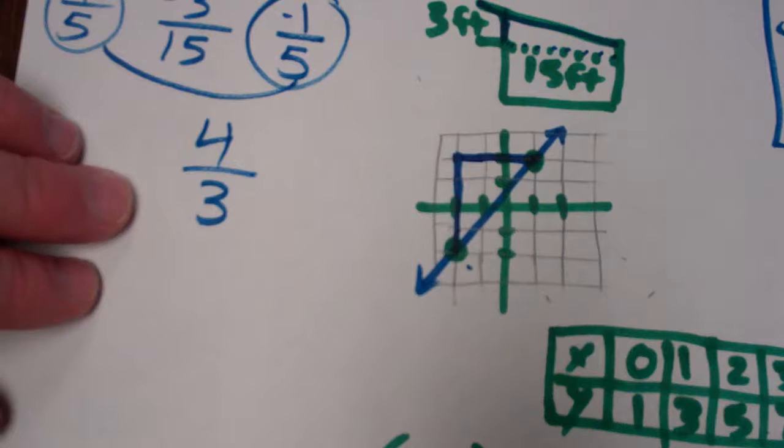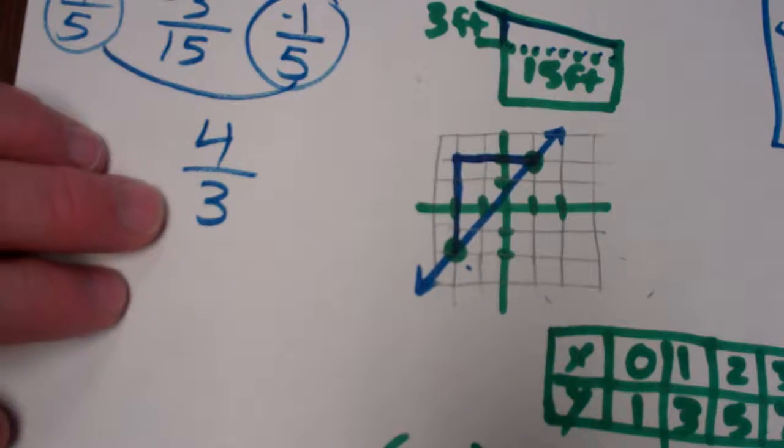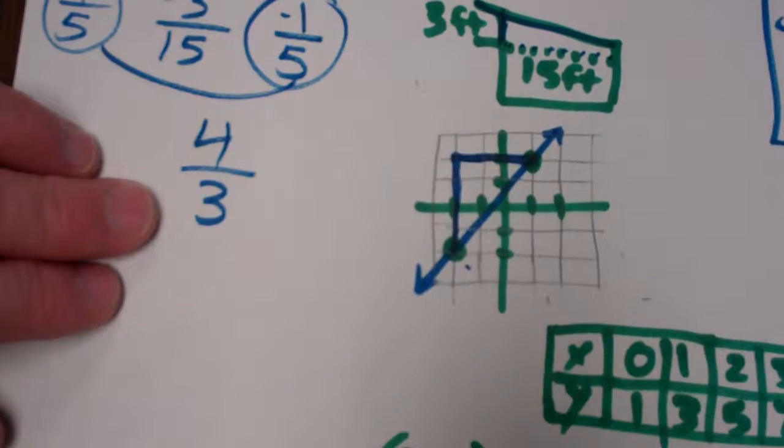So, there's your slope, y equals 4 thirds x. And of course, it's not proportional because it doesn't hit exactly 0, 0, so there would be a boyfriend on the back.